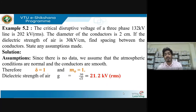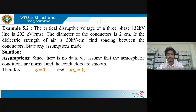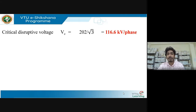Dielectric strength of air: 30 ÷ √2 = 21.2 kV RMS. Conductor radius is 2 ÷ 2 = 1 centimeter. Critical disruptive voltage from the problem is 2/√2 — you divide by √3 to get the phase value of critical disruptive voltage, because the formula gives V_c per phase.